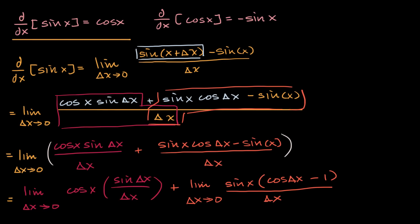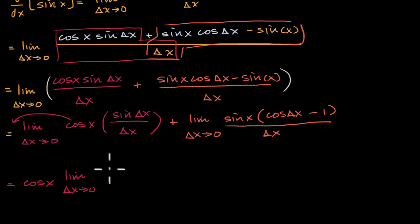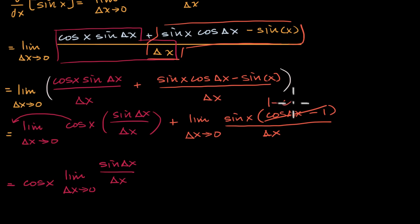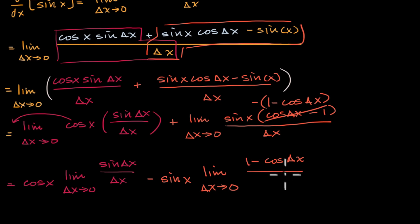Let me simplify this even more. This left-hand expression: cosine of x has nothing to do with the limit as delta x approaches zero, so we can take it outside of the limit. So we have cosine of x times the limit as delta x approaches zero of sine of delta x over delta x. And cosine of delta x minus one is the same thing as one minus cosine of delta x times negative one. So we have minus sine of x times the limit as delta x approaches zero of one minus cosine of delta x over delta x.